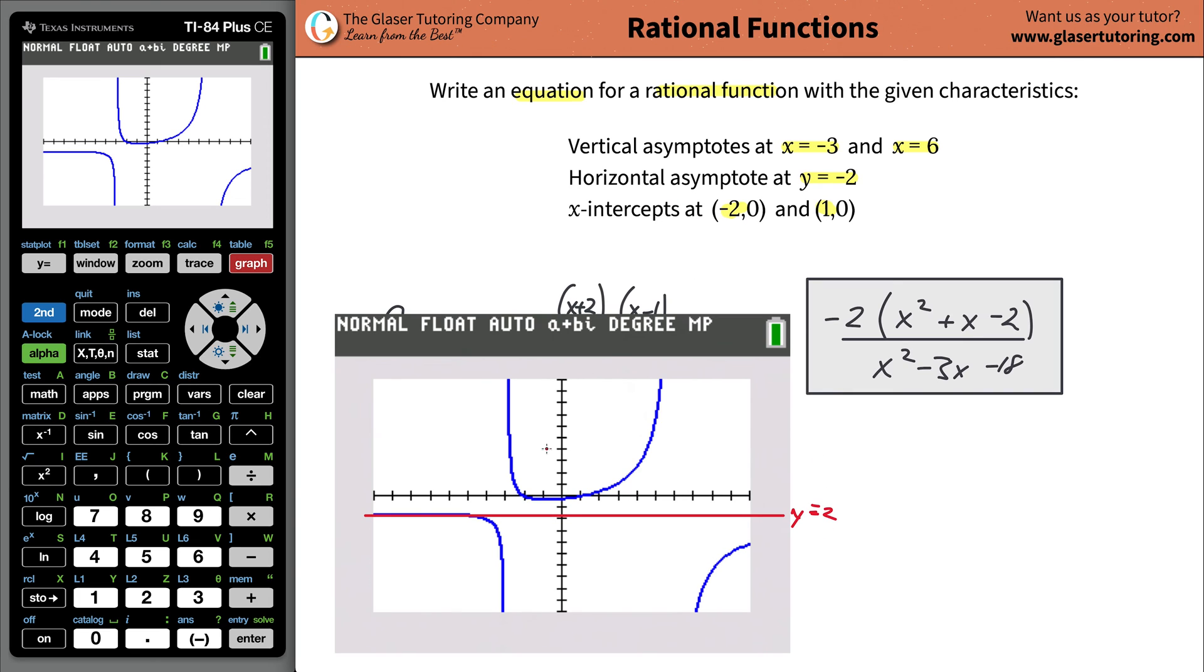The x-intercepts of negative 2 and 1, look, it crossed the x-axis at negative 2, crossed the x-axis at 1. Beautiful thing.